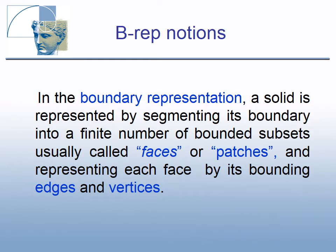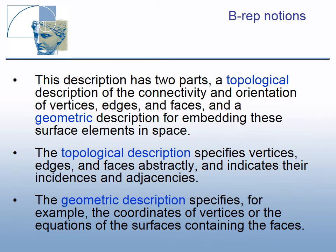Let us first give several needed definitions and then illustrate them by examples. In boundary representation, a solid is represented by segmenting its boundary into a finite number of bounded subsets, usually called faces or patches, and representing each face by its boundary edges and vertices. The BREP description has two parts: a topological description of the connectivity and orientation of vertices, edges, and faces, and a geometric description for embedding these surface elements in space.